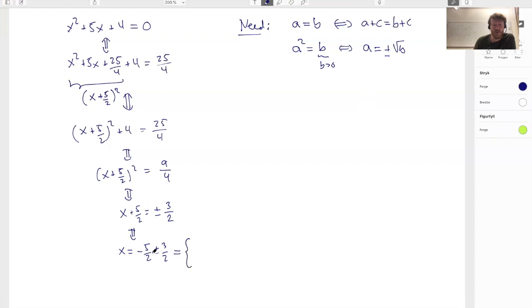And now there are two possibilities here. Either I add 3 halves or I subtract 3 halves. If I add, I get minus 2 divided by 2. If I subtract, I get minus 8 divided by 2. And this is then minus 1 and minus 4.